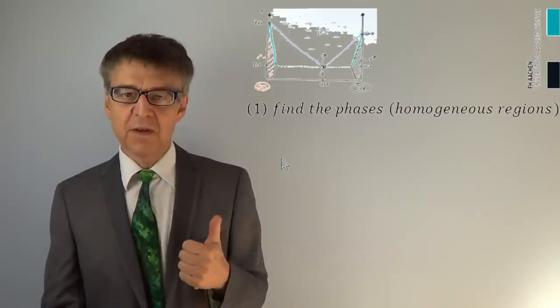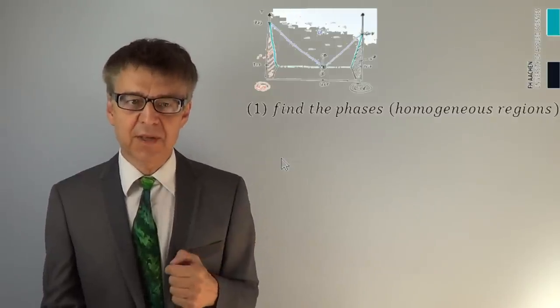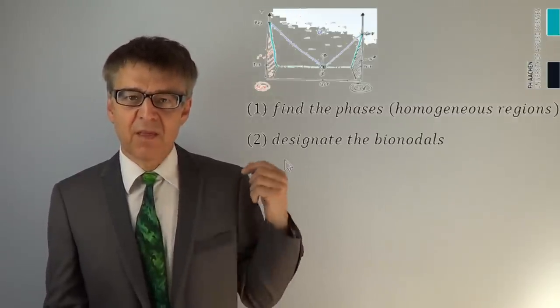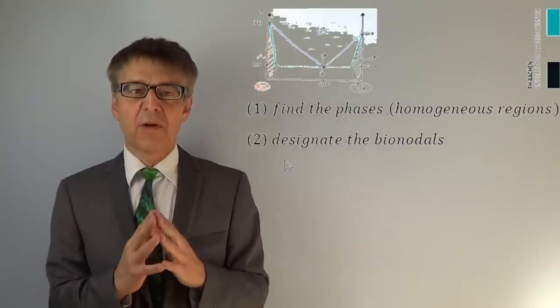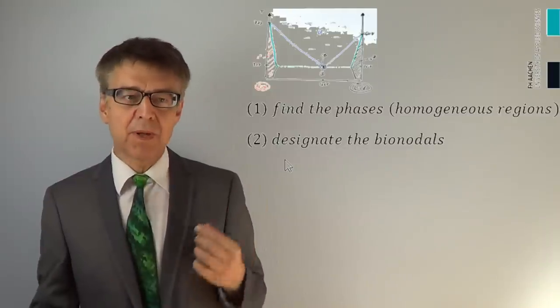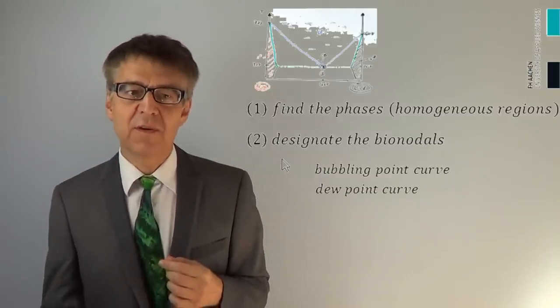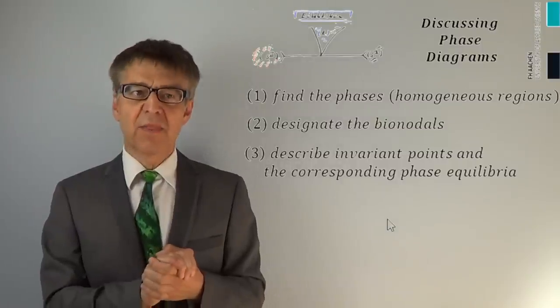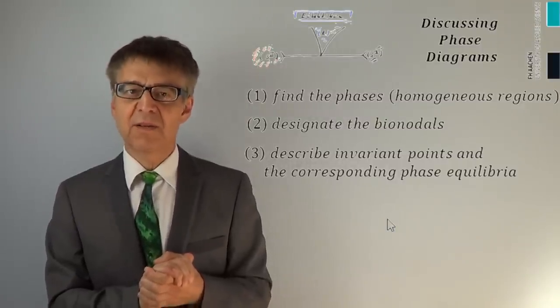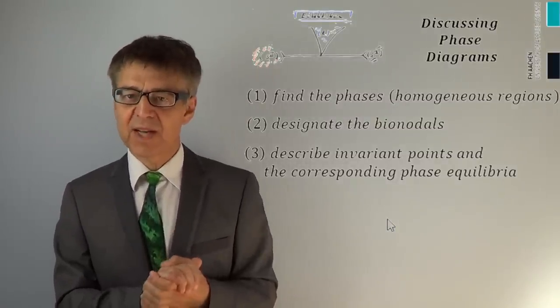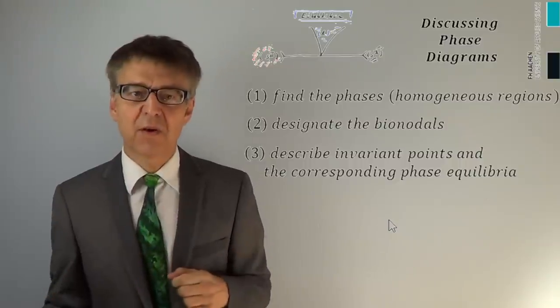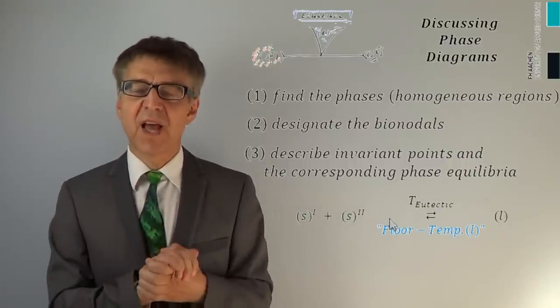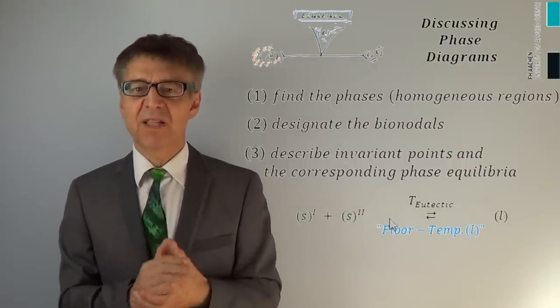Let me give you some rules for discussing phase diagrams. First, find the homogeneous areas. Then search for the binodals and designate them as bubble point curve, dew point curve, liquidus, solidus, and so on. Finally, determine the invariant points and characterize them as eutectic, peritectic, and so on, recording the corresponding phase equilibrium. Thanks for watching.